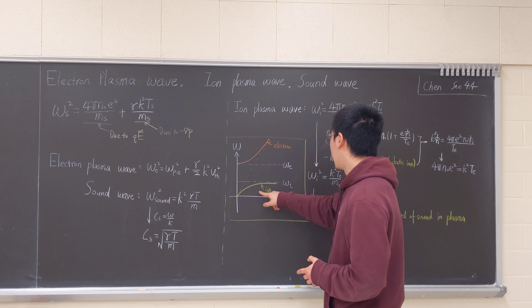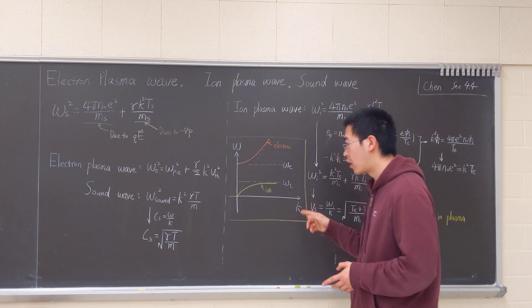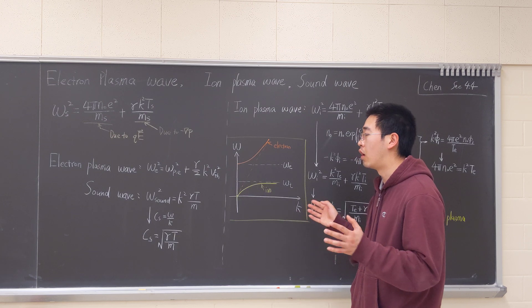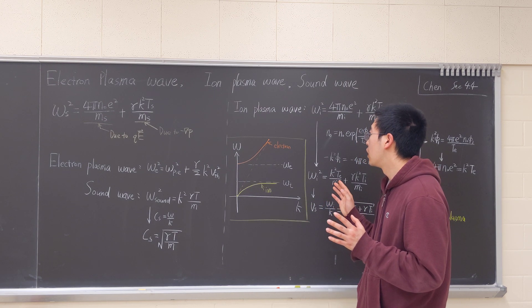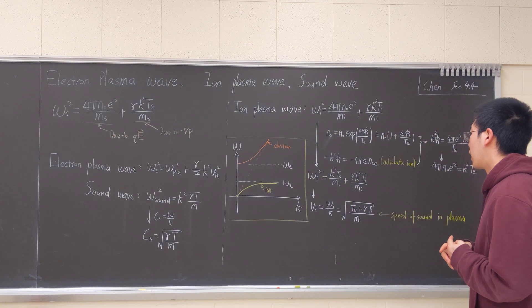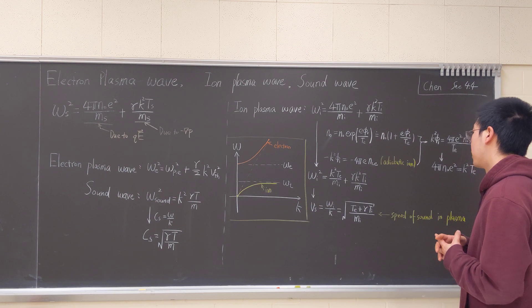So we have, if K is sufficiently large, which means the wavelength is sufficiently small, then the ion will move in the plasma frequency.